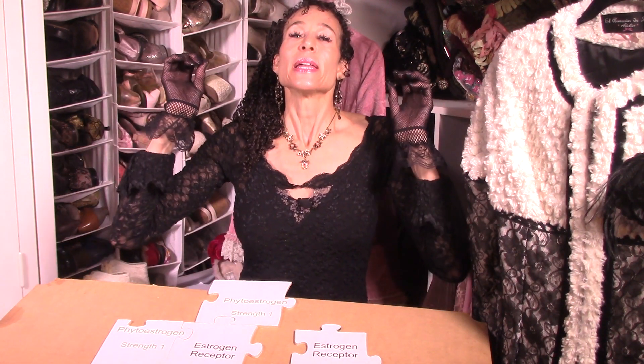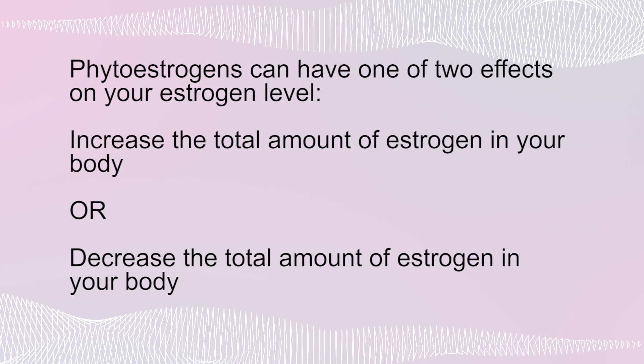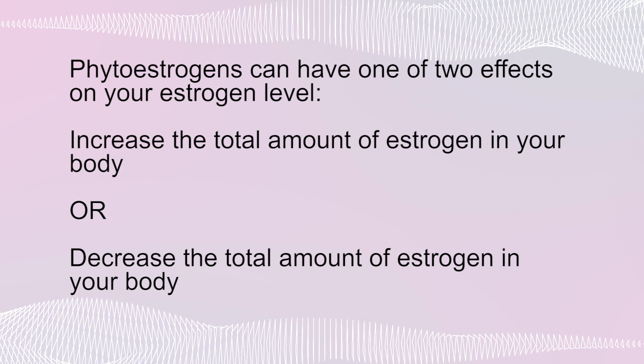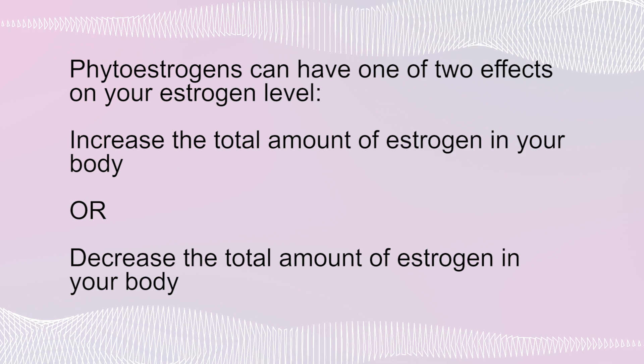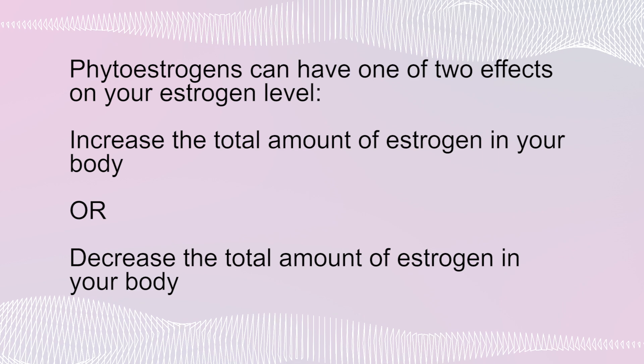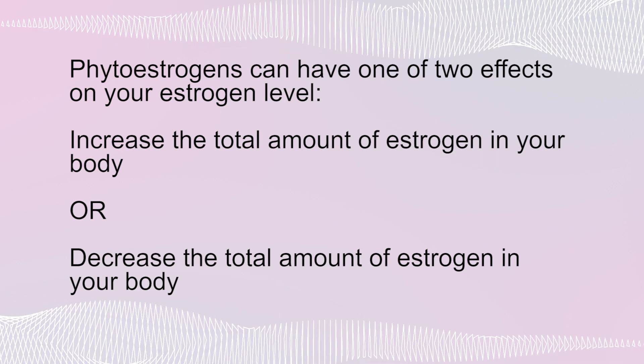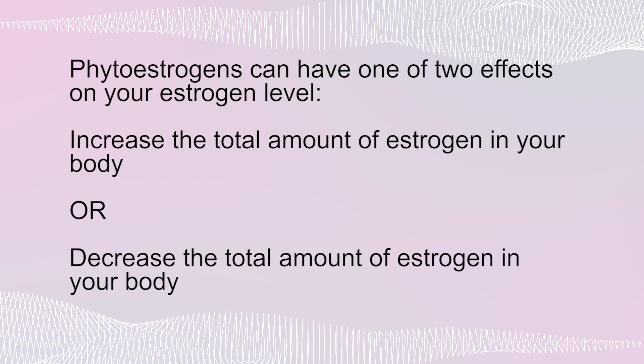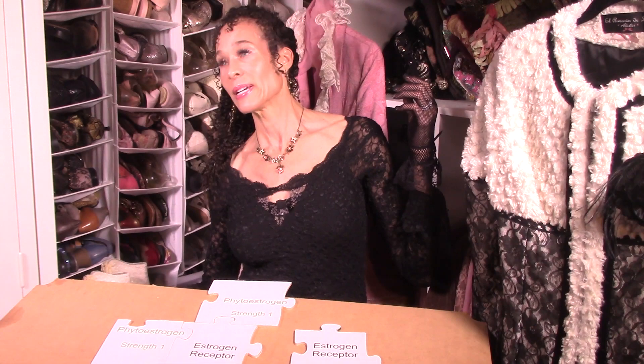So to summarize: phytoestrogens can have one of two effects on your estrogen level. They can increase your total body estrogen if your overall circulating estrogen is low, or they can decrease your total estrogen if your overall circulating estrogen is high. It's a little biochemistry — you didn't know you were going to get biochemistry with your menopause — but it's important for you to be able to use the information to manage your menopause your way.